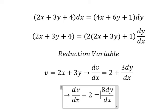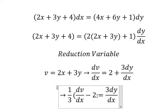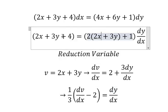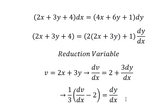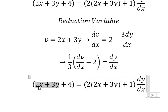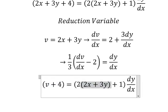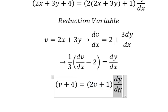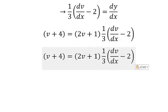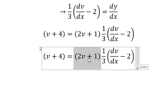And later we divide both sides by number three. Now this one we change by v, this one we change by v, and dy over dx we change by this one. Next we need to divide both sides by 2v plus 1.